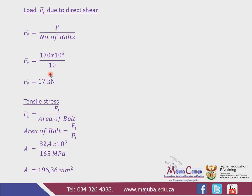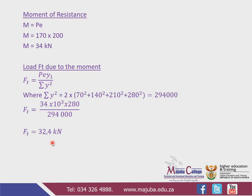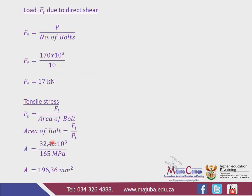This connection is going to be subjected to two stresses: shear stress and tensile stress. Now that we have the forces, let's calculate the required bolt areas for both. For tensile stress, the formula is: Area = Ft / tensile stress. So: Area = 32,400 N / 165 MPa = 196.36 mm². That is the cross-sectional area required based on tensile stress.